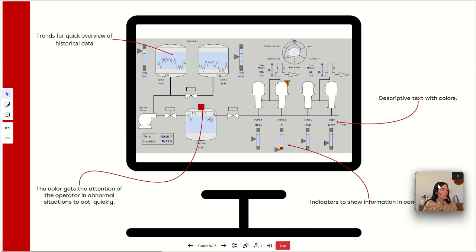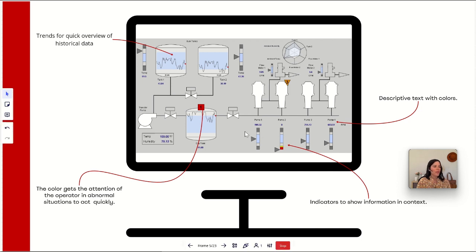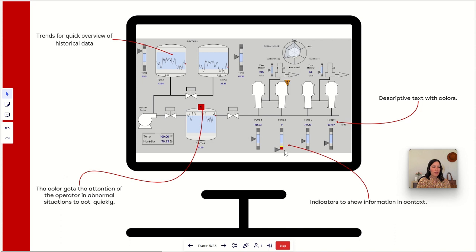Let's talk about some of the improvements we have now. The information on the screen is shown in its context. Take these indicators: they show information about how the process is now in its context, because when a value is inside the desired range, everything is good. But it is very easy for the operator to see that something is going wrong — for example, if a value is too low — so they can act quickly to see what's going on in the process.